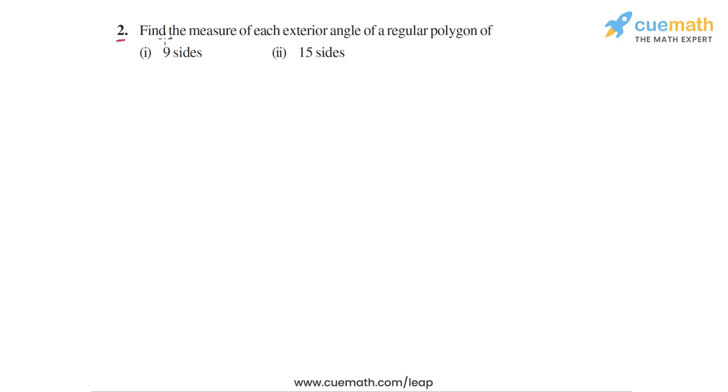In question 2, the problem statement says: find the measure of each exterior angle of a regular polygon of 9 sides and of 15 sides. The important thing to note is that each of the two polygons — of 9 sides and 15 sides — is a regular polygon.